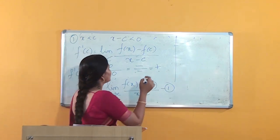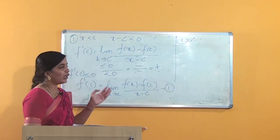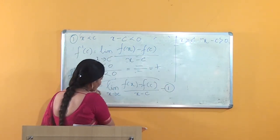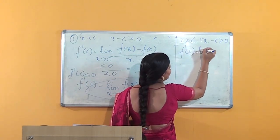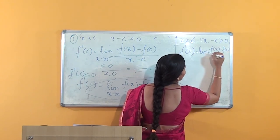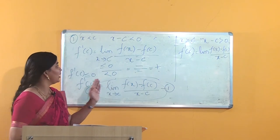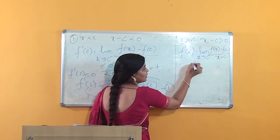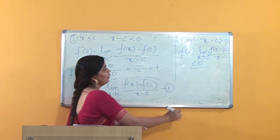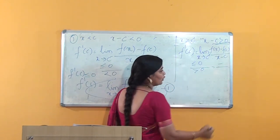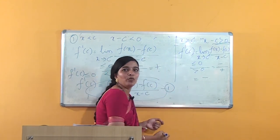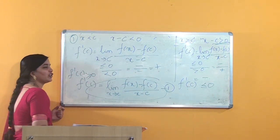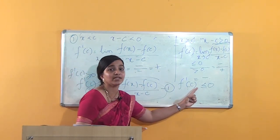Case 2: x is greater than c. Then x − c is greater than 0. Applying the limit expression again, f'(c) equals the limit of [f(x) − f(c)] / (x − c) as x tends to c from the positive end (x → c⁺). The numerator is less than or equal to 0 and the denominator is greater than 0, so we get numerator negative and denominator positive, giving a negative value. Therefore f'(c) ≤ 0.